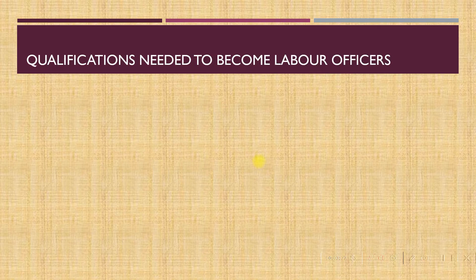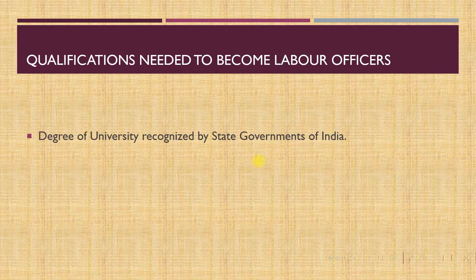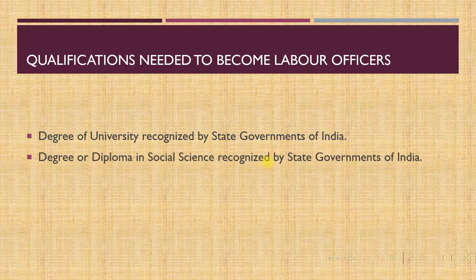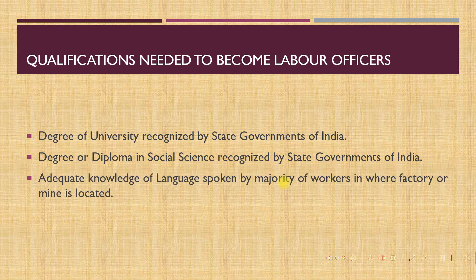To become a labour officer, he or she should hold a degree from a university recognized by the state governments of India. A degree or diploma in social science recognized by the state governments of India is a must. There should also be adequate knowledge of the language spoken by the majority of workers where the factory or mine is located — the labour officer should be able to use that language effectively.